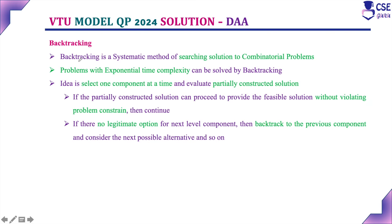What do we mean by backtracking? Backtracking is a systematic method of searching solutions to combinatorial problems. Combinatorial problems are the most difficult problems to find the exact solution — most probably we won't get an exact solution, only an approximate solution. Problems with exponential time complexity are also difficult, and we can solve these difficult problems by applying the backtracking technique.